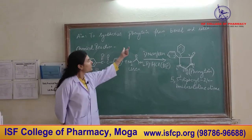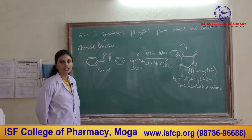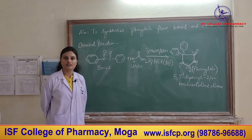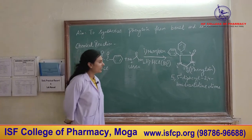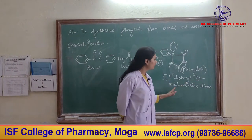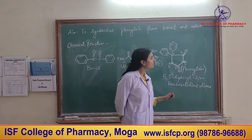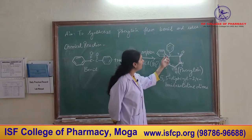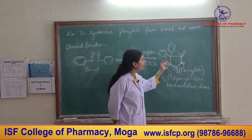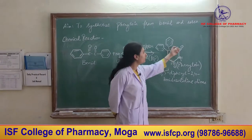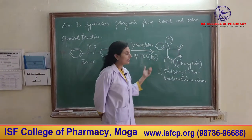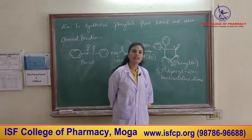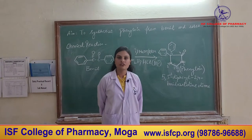The aim of the practical is to synthesize phenytoin from benzil and urea. Phenytoin is an example of an anti-convulsant drug. It is chemically known as 5,5-diphenyl-2,4-imidazolidinedione. In the structure, this five-membered ring is known as imidazolidine; at the 5 and 5' positions there are two phenyl rings, and at the 2nd and 4th positions there are two carbonyl groups present.